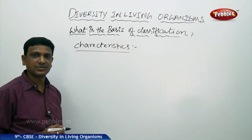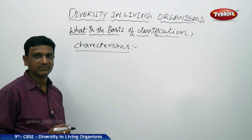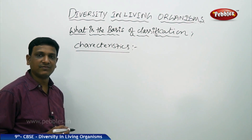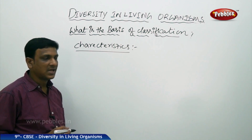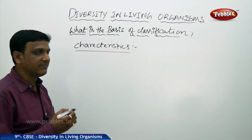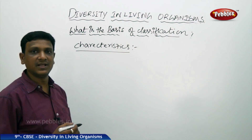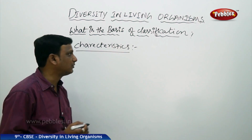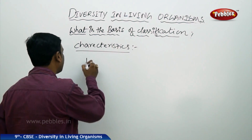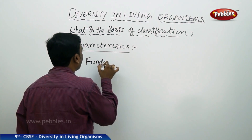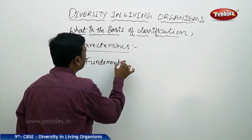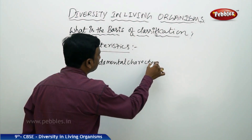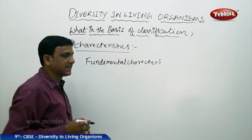Organisms will have so many functions and different kinds of appearances — that means they will have many similarities and dissimilarities, many different characteristics. So which one do you consider as the main character? You have to take the fundamental characters. What are these fundamental characteristics?